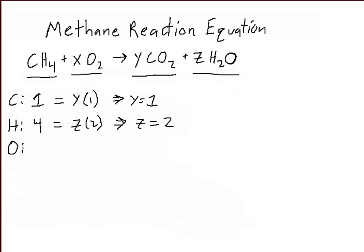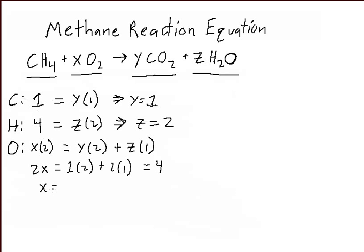And next we're going to look at the oxygen term, so on the left hand side we can see that we have X times 2 equal to Y times 2 plus Z times 1. So we can see 2X is equal to 1 times 2 plus 2 times 1, which is equal to 4, therefore X is equal to 2.